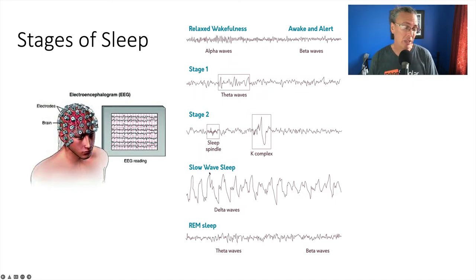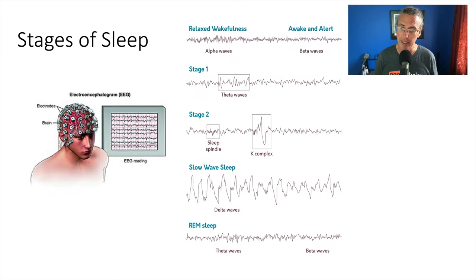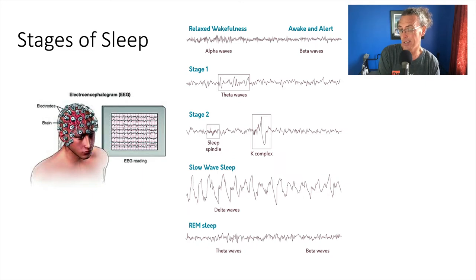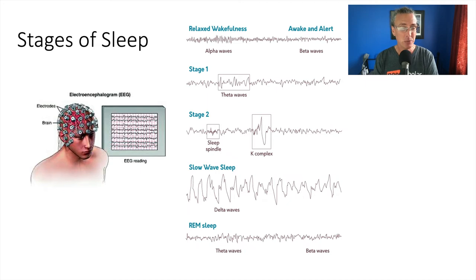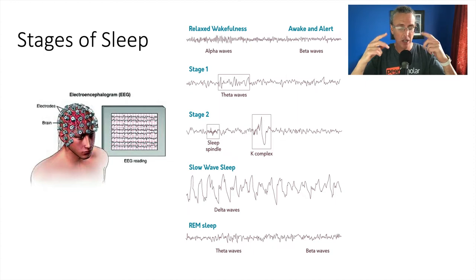After stage two we hit what we call slow-wave sleep, with big delta waves — high amplitude, low frequency. This is your brain chilled out, a very non-intense signal. That's the brain in its deepest sleep. After a while it then goes into REM sleep, where dreams happen. REM stands for Rapid Eye Movement — you can literally watch their eyes moving beneath their eyelids.